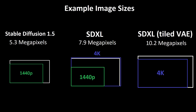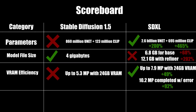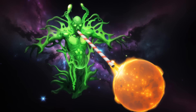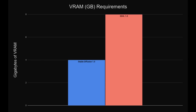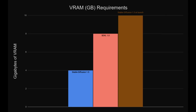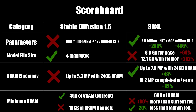Counting the 10.2 megapixel image that completed with Tiled VAE, that's a whopping 92% increase. This is an absolutely massive win for SDXL, since VRAM is currently the main hardware bottleneck for Stable Diffusion. There is a downside though: SDXL currently requires at least 8GB of VRAM to run, which is twice as much as Stable Diffusion 1.5. However, keep in mind that when it was first released, Stable Diffusion 1 required 10GB of VRAM — more than SDXL requires now. Hopefully the trend of decreasing requirements will continue, and those with 4GB graphics cards will be able to enjoy SDXL in the coming months.